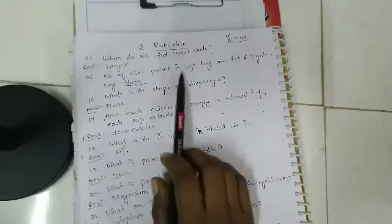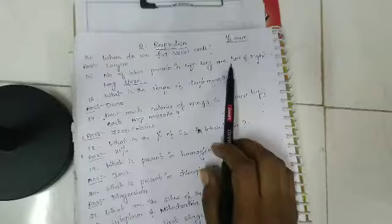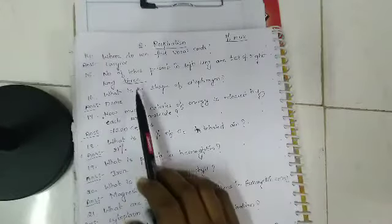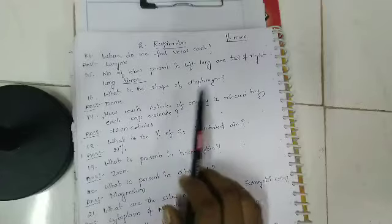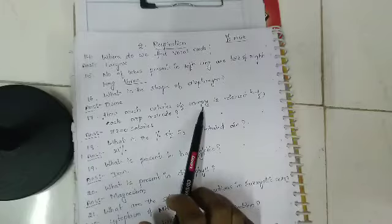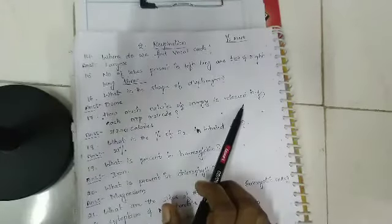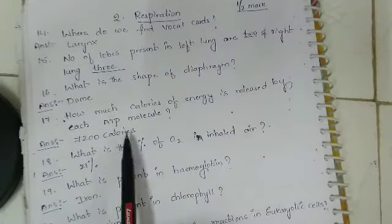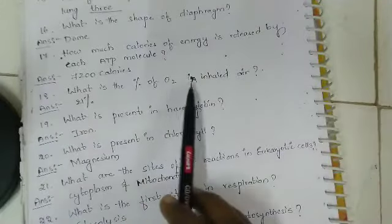What is the shape of diaphragm? Dome shape. How much calories of energy is released in each ATP molecule? 7200 calories. What is the percentage of oxygen in inhaled air? 21 percent.